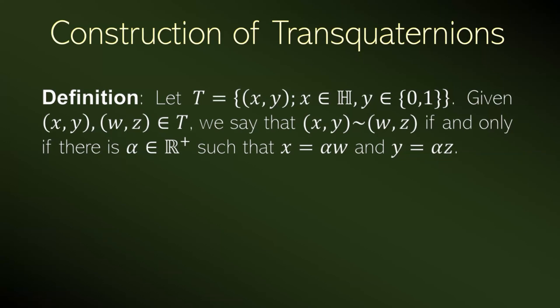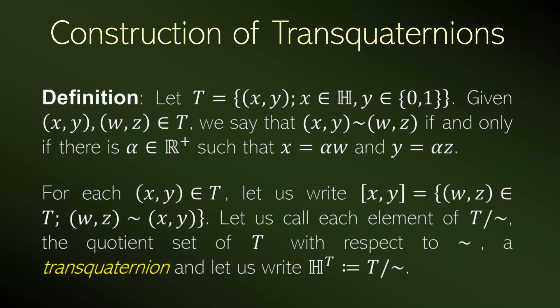We denote the quotient set — that is, the set of all equivalence classes — by ℍ^T. And we call this set the set of transquaternions; that is, each equivalence class is a transquaternion.